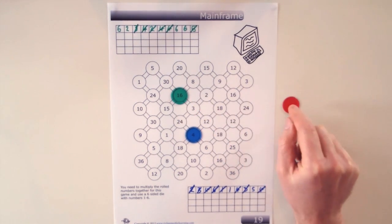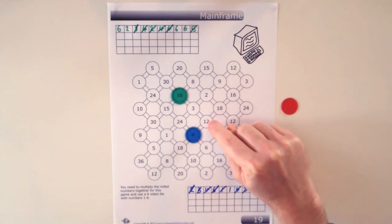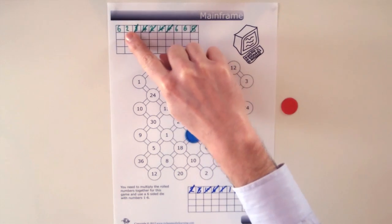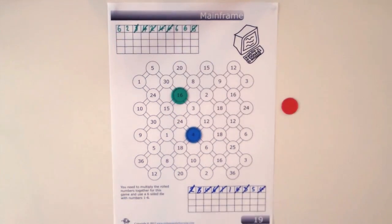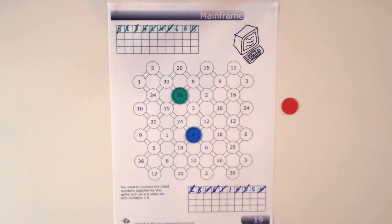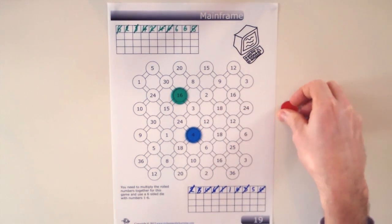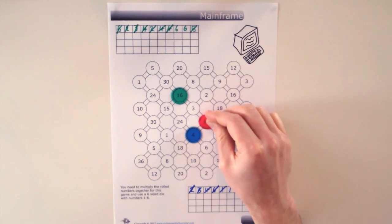So green is going to choose to use the blocker to stop blue from moving to the 12. And they do this because they have got numbers they can multiply together: 2 multiplied by 6 to equal 12. Even though the 12 isn't right next to green they can still put the blocker on the grid.